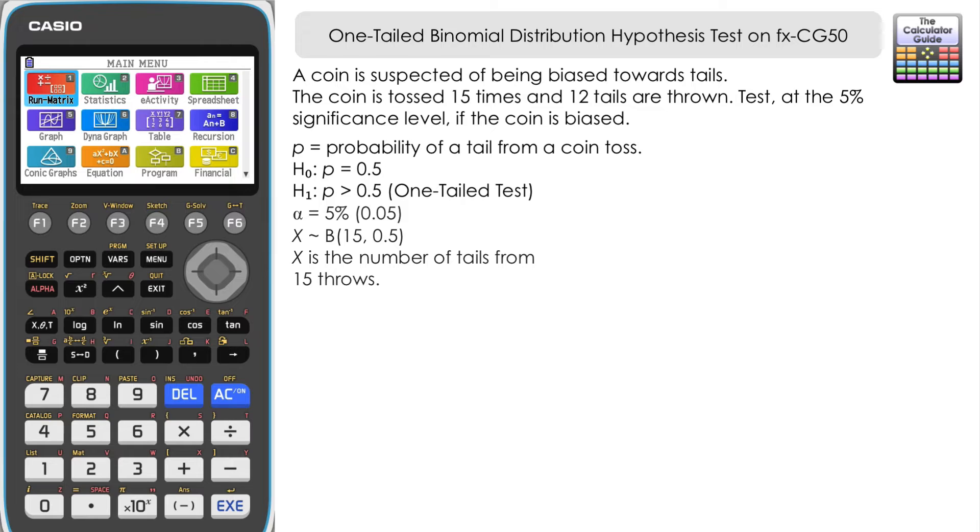X is distributed binomially with N of 15, the number of trials, and P of 0.5 from our null hypothesis. X being the number of tails from 15 tosses.